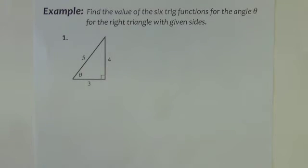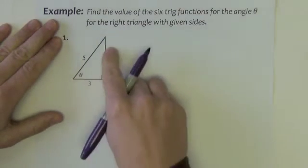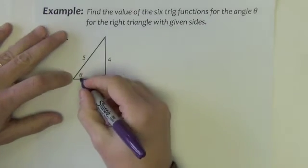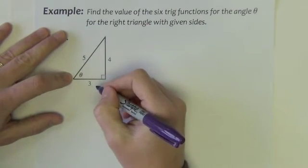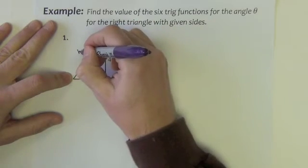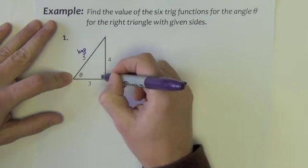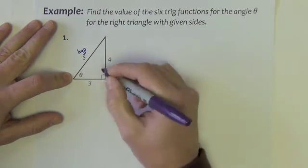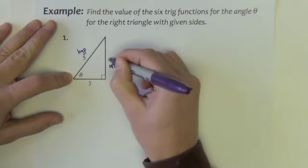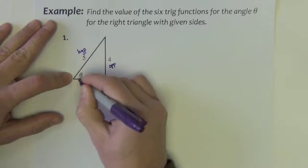Okay, first example problem. Find the value of the six trigonometric functions for the angle theta for the right triangle with given sides. So three, four, five right triangle, my angle theta. I'm going to go ahead and label the sides. I don't always do it in practice, but it's a good practice as you learn. The five is the hypotenuse. It's the longest side, which makes it the hypotenuse. It's also across from the right angle. The four and the three. The four is the opposite because it's across from the angle. The three is the adjacent as it's right next to the angle.